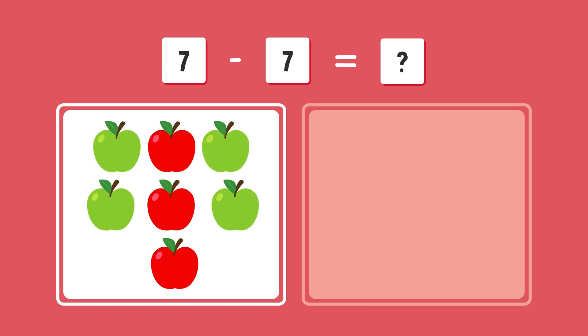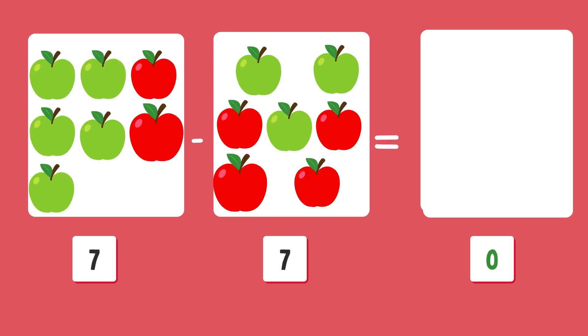What is seven minus seven? Ooh, tricky one. Correct answer is zero.